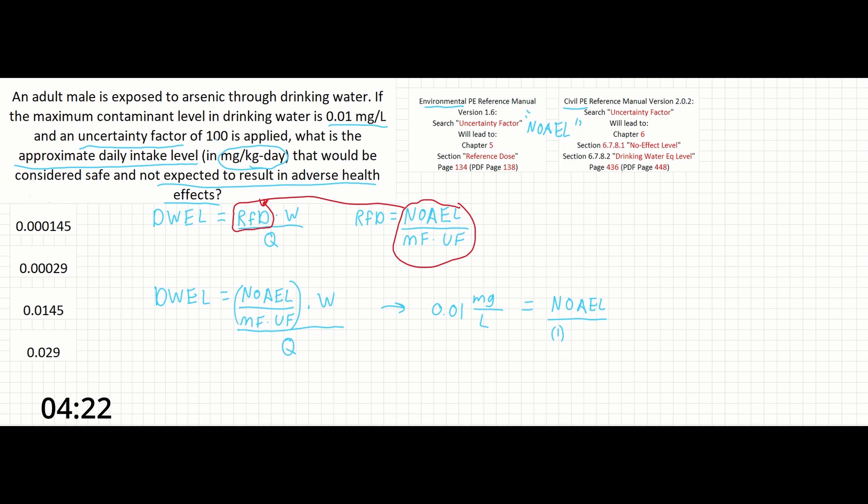This leaves us with terms W and Q. In the environmental reference manual, these can be found a few pages below the equations in a section called intake rates. An adult male is assumed to weigh 78 kilograms and is assumed to drink 2.3 liters of water per day.